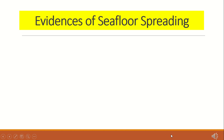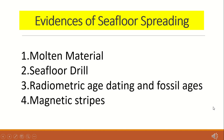The idea of seafloor spreading is supported by several evidences. Scientists found that the youngest rocks are found near the ridge, while the oldest rocks are found far from the ridge. This provides evidence that seafloor spreading and new crust is being created at the ridge. Since there is spreading happening at the ridge, the sediments near the ridge are thinner and progressively thicken as you move away.